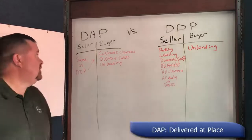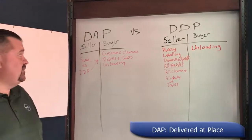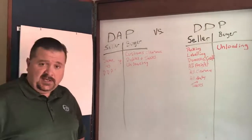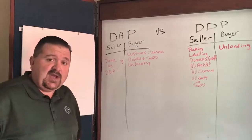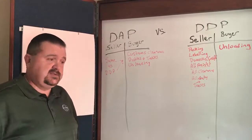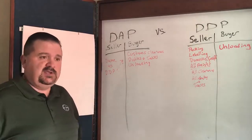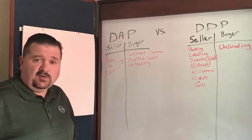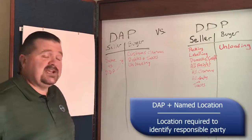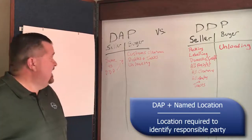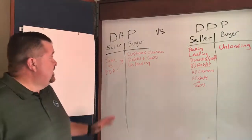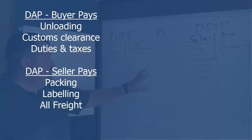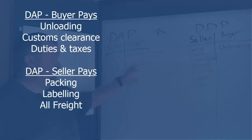So DAP — the only difference between DAP, which is Delivered at Place, and again you have to have that place, so Delivered at Place St. Albans, Vermont, or DAP London, England, or whatever the place may be; you need an actual location. DAP Delivered at Place is exactly the same as DDP except the buyer pays for customs clearance, duties, and taxes, as well as the unloading — same as DDP.